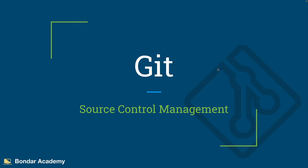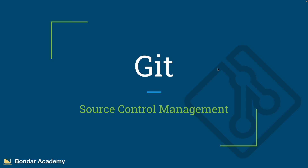Let's begin with Git source control management. In order to better explain how Git works, let me start with a simple example — working with a simple text document. What can you do with a simple text document? You can create the document, save the document, then edit it and save again. You can repeat this process again and again. Once you make a change, you save the document in order to preserve your changes and not lose them.